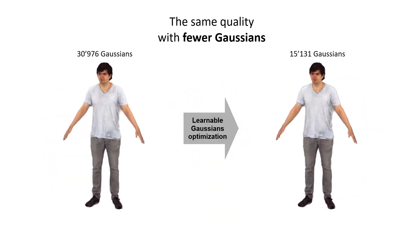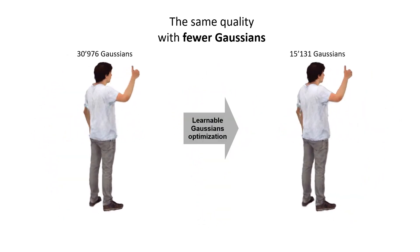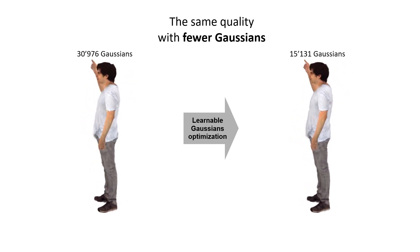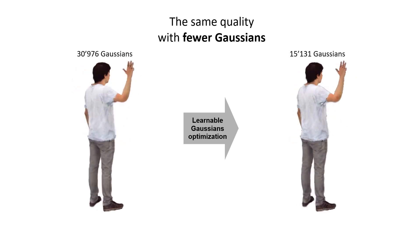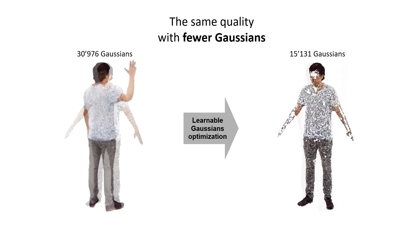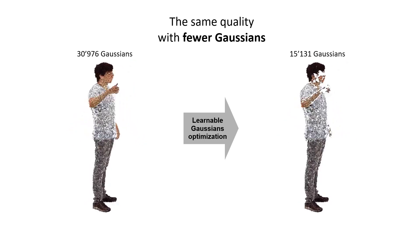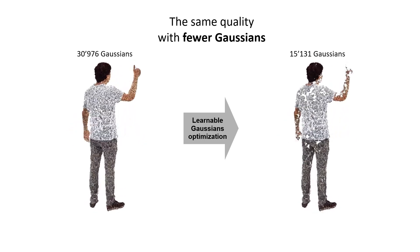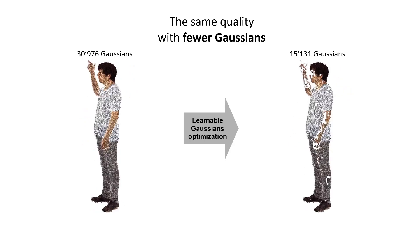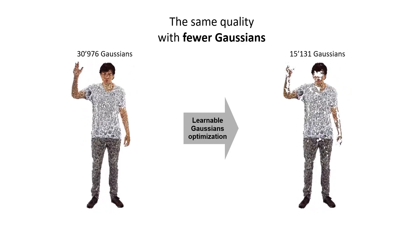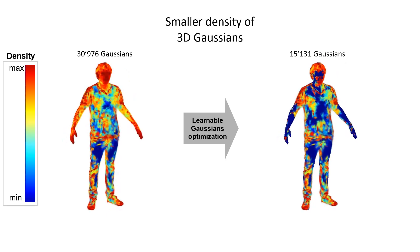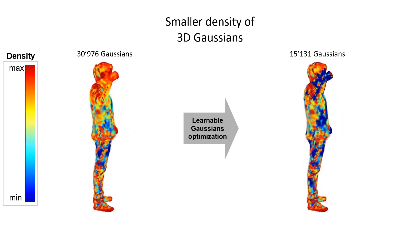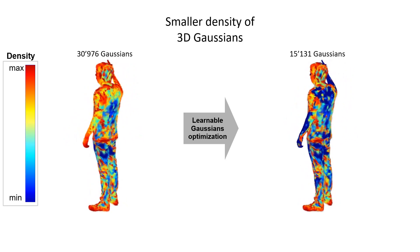We demonstrate its efficiency to animate and render full-body human avatars, controlled via the SMPL-X parametric model. Our model learns to apply Gaussian splatting only in areas of the SMPL-X mesh where it is necessary, like hair and out-of-mesh clothing. This results in a minimal number of Gaussians being used to represent the full avatar.